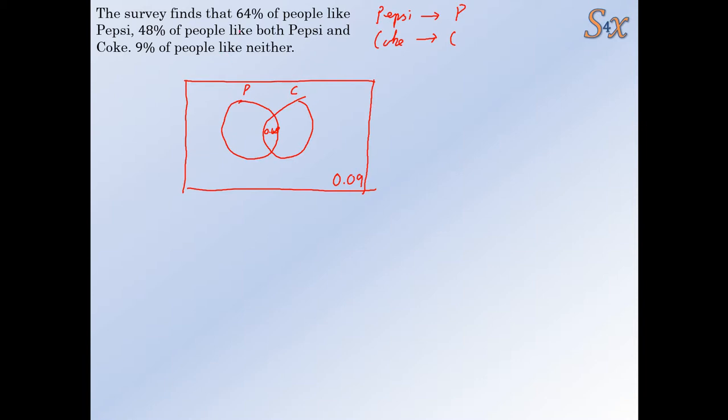Now, we know that 64% of people like Pepsi, which makes up this area and the middle. So if 64% of people go there and we've already used up 48% of people in the middle, then that leaves us with 16% of people who just like Pepsi, but not Coke. 0.16 goes there. And can you see now that that 64% works? The probability of liking Pepsi is 0.16 plus 0.48, which gives us the 64% in the question.